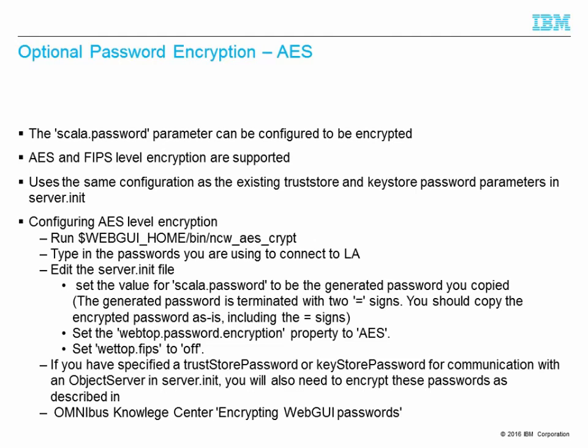You have the option to encrypt the password defined in server.init. Both AES and FIPS level encryption are supported. We use the same configuration as the existing trust store and key store parameters in server.init. To configure AES level encryption, run the NCW AES script tool which ships with WebGUI, type the password you're using, and copy the encrypted password that's returned. Edit the server.init file and set the value for scala.password to the generated password you copied. The generated password is terminated with two equal signs — you need to copy the entire encrypted password including the equal signs.